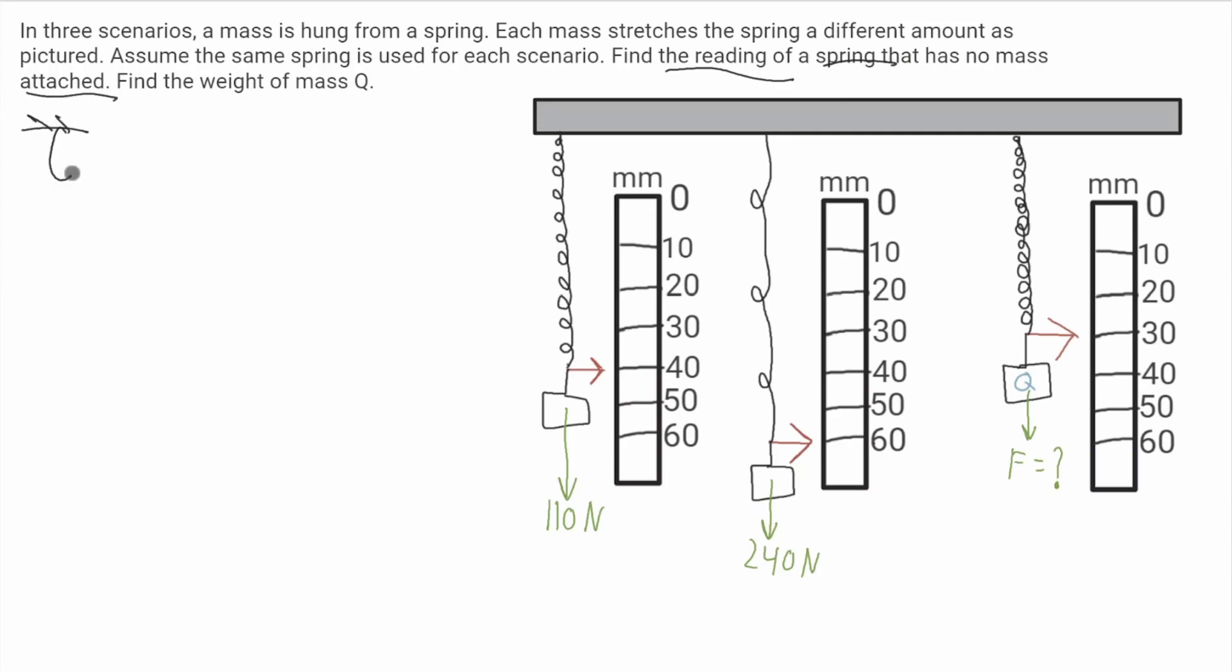We need to find the reading of the spring that has no mass attached. Well it'll look like this. This will be the spring, this will be the ruler, and we need to find where on the ruler this spring will be if it has no mass attached.